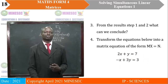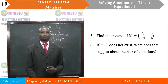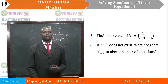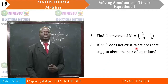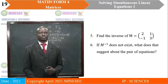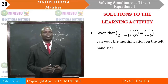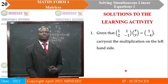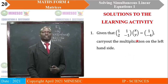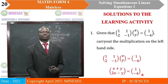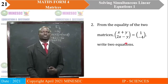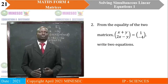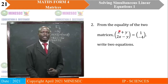These are the two simultaneous equations to transform into a matrix equation. To multiply, we take the first row, which dives down and multiplies the two elements. So we have 1 times x plus 1 times y, giving us x + y. In the second case, we'll have 2x - y. From the equality of the two matrices, x + y equals 1, while 2x - y equals -4. These are the two equations.